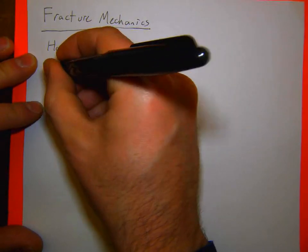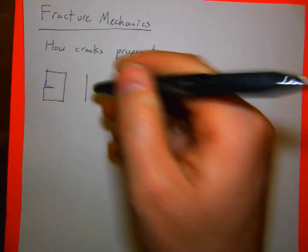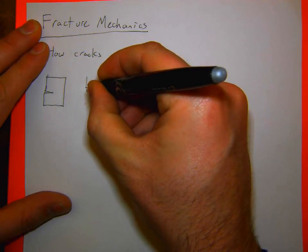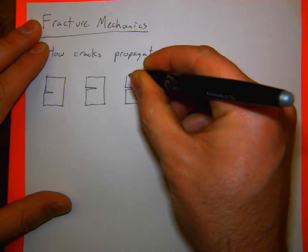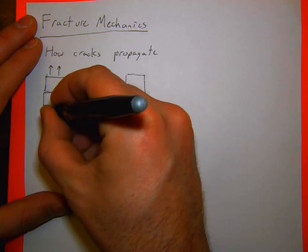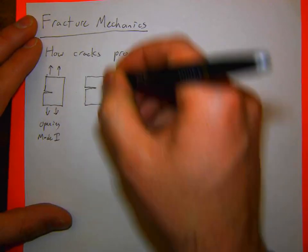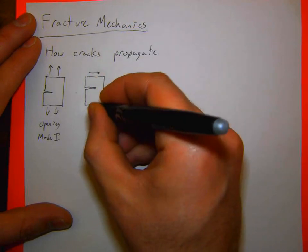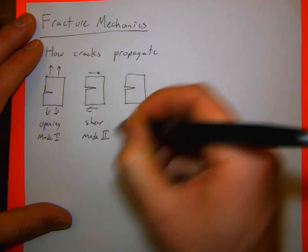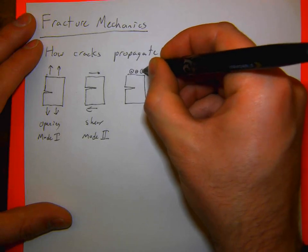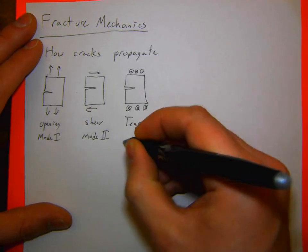There are three fracture modes: Mode I (opening mode), which is the most common; Mode II (in-plane shear); and Mode III (out-of-plane shear, or tearing).